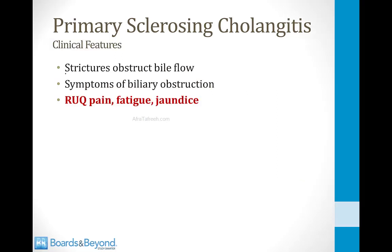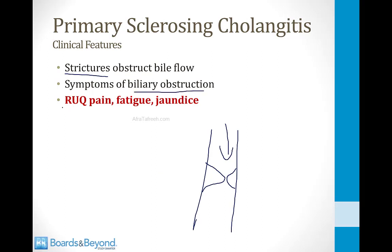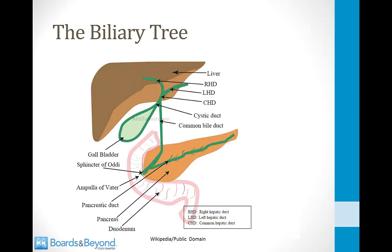The clinical features all derive from strictures that obstruct bile flow. Inflammation leads to scar tissue that sticks together and blunts the flow of bile through the bile duct. The symptoms will be those of biliary obstruction: right upper quadrant pain, fatigue, and jaundice. In sclerosing cholangitis, inflammation of the bile ducts causes fibrous tissue to form, developing strictures — obstructions to flow — throughout the biliary tree, blocking the flow of bile.